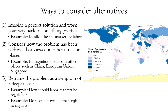Two: consider how this particular problem or issue has been addressed or viewed in other times or places. For example, you can look at immigration policies currently being enacted in other nations or unions, like China, the European Union, or Singapore. Or you could look at policies that were previously enacted at other times, such as what was the U.S. immigration policy 100 years ago, and how effective was it.